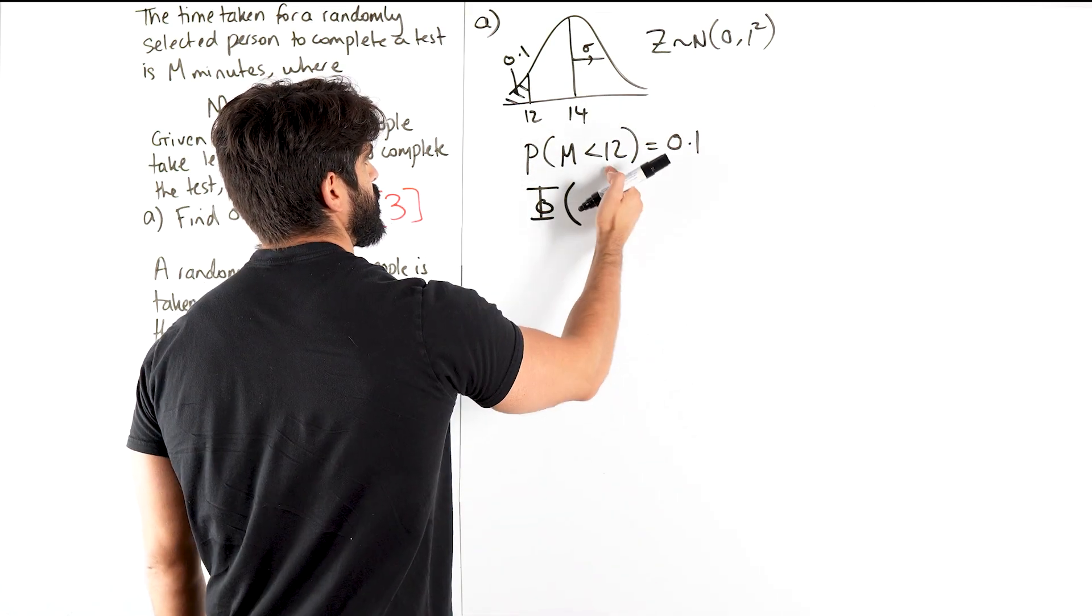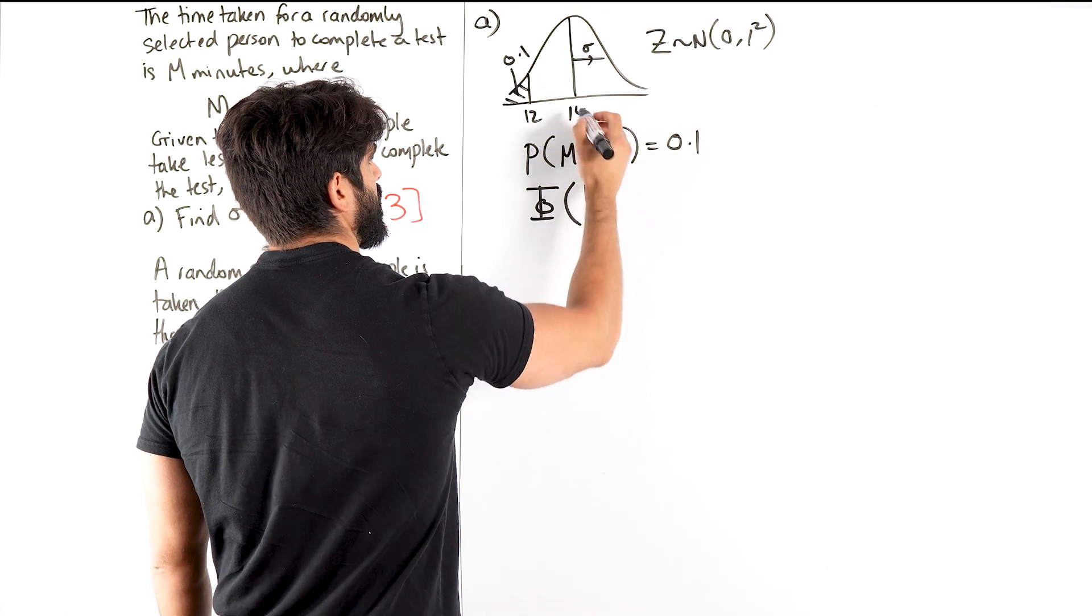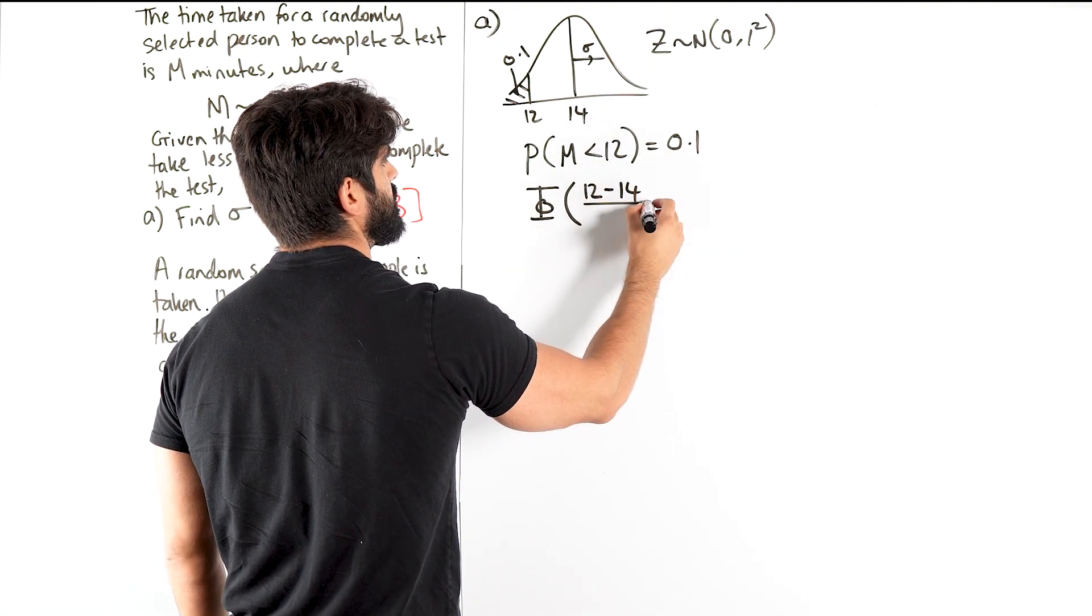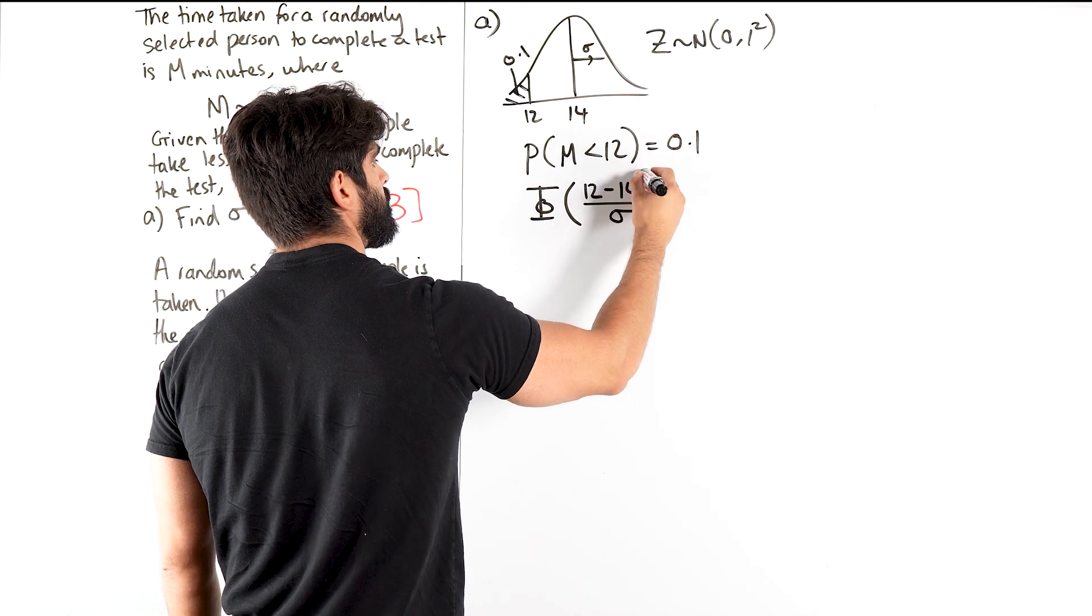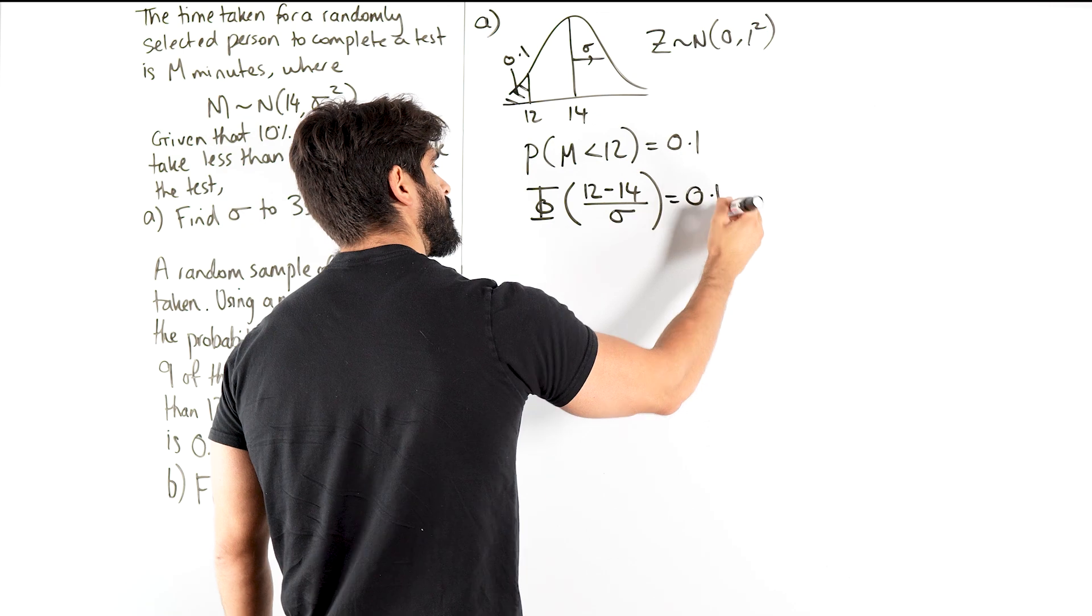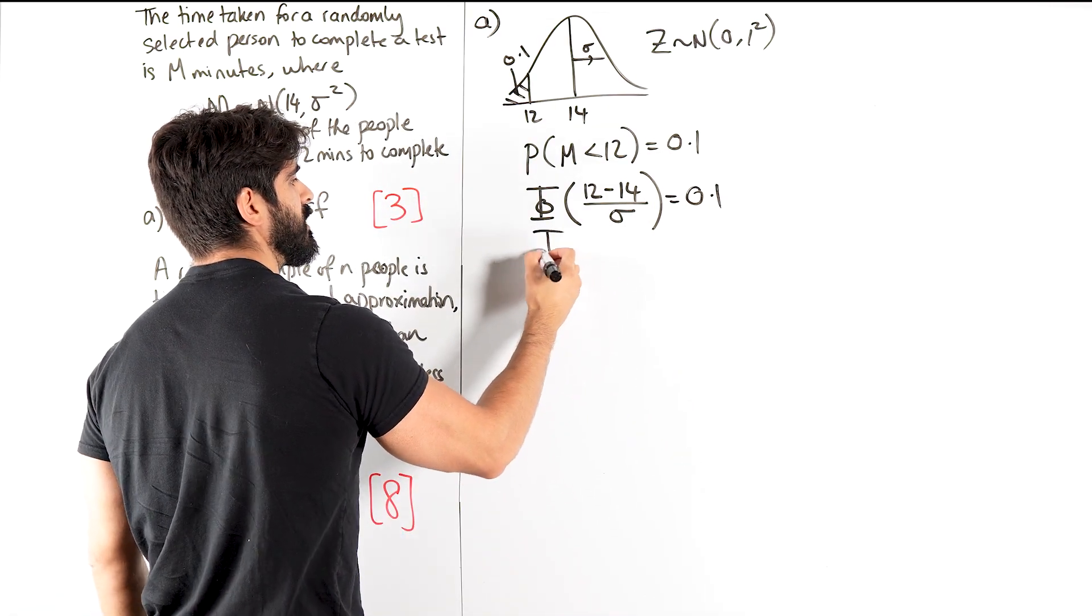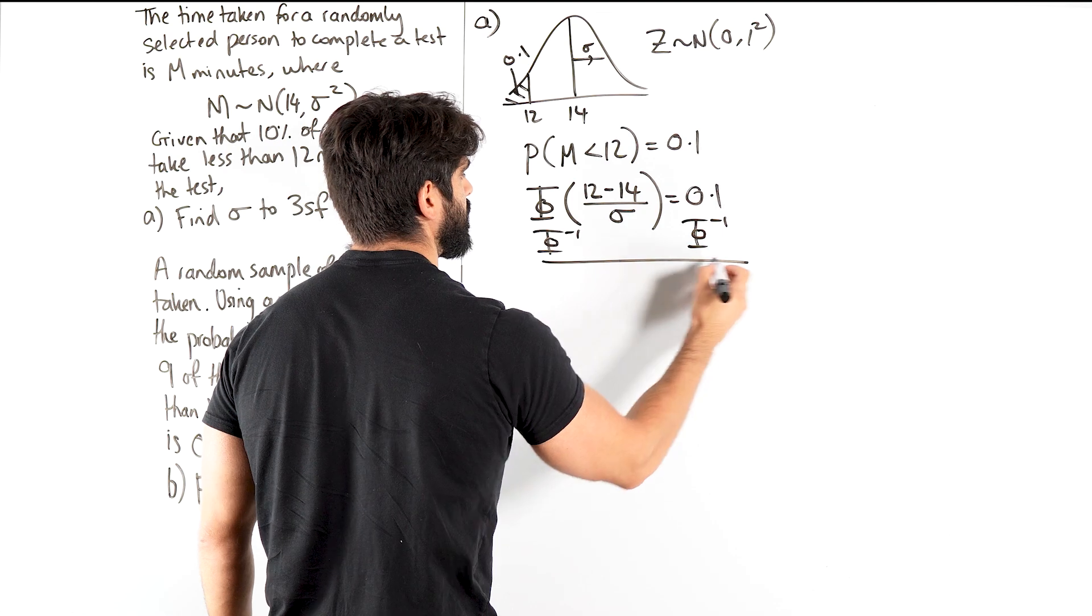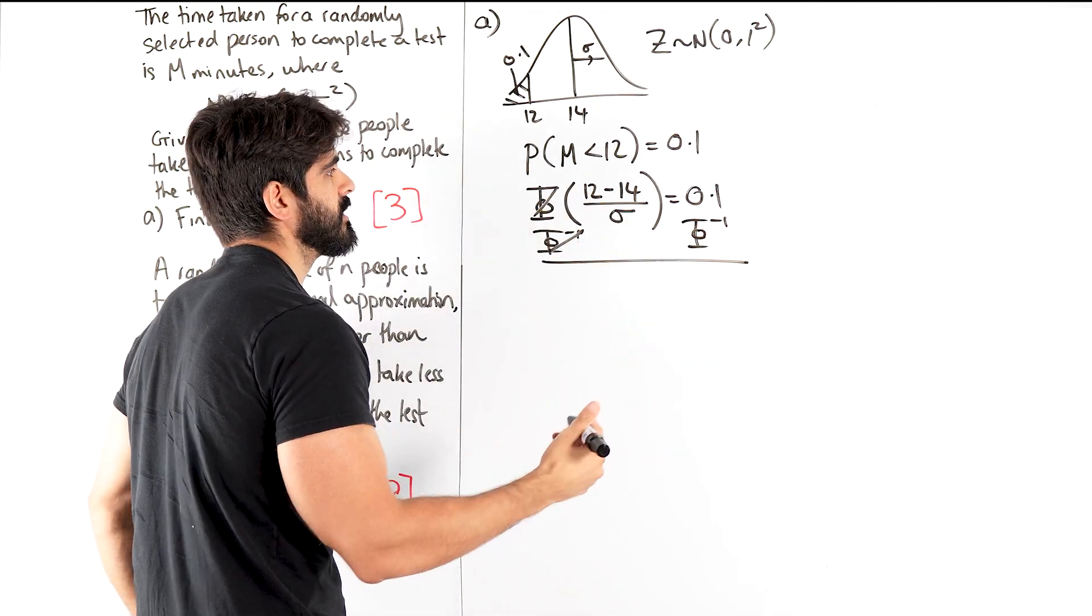And then what you do is you take your input, you subtract the mean so that the mean goes to 0, and then you divide by the standard deviation to make the standard deviation 1. We obviously don't know what the standard deviation is. And by rewriting it as phi, to rearrange we know we need to do inverse phi, which means we need to do the inverse normal distribution.